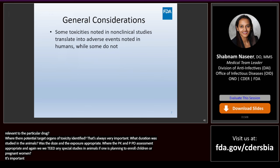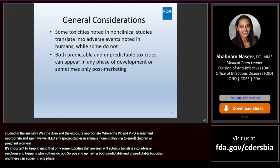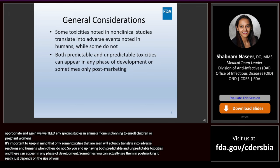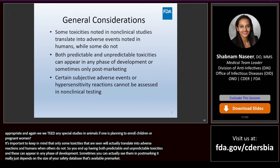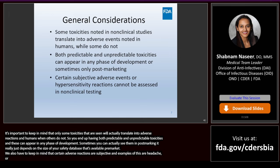It's important to keep in mind that only some toxicities seen in non-clinical studies will actually translate into adverse reactions in humans while others do not. You end up having both predictable and unpredictable toxicities, and these can appear in any phase of development — sometimes only post-marketing, depending on the size of your safety database pre-market. We also have to keep in mind that certain adverse reactions are subjective, such as headache or hypersensitivity reactions, and they cannot really be assessed in non-clinical testing.